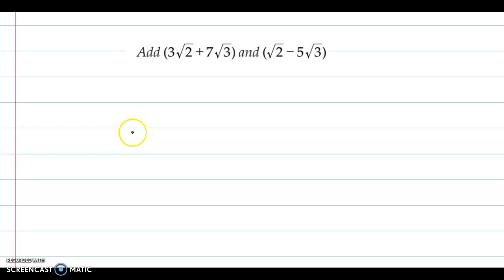Hello and welcome back. We now discuss an example from the topic surds. The question is: add 3√2 + 7√3 and √2 - 5√3.